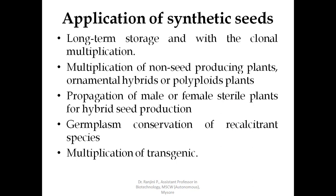Multiplication of non-seed producing plants, ornamentally important plants, and polyploid plants can be multiplied using artificial synthetic seed production. It is helpful in propagation of male or female sterile plants for hybrid seed production, since we are concentrating on somatic tissue, cell aggregates, shoot buds, or somatic embryos — the propagation of sterile plants is possible by the synthesis of artificial seeds. This is one way of germplasm conservation, because you can conserve any somatic tissue by artificial seed preparation.